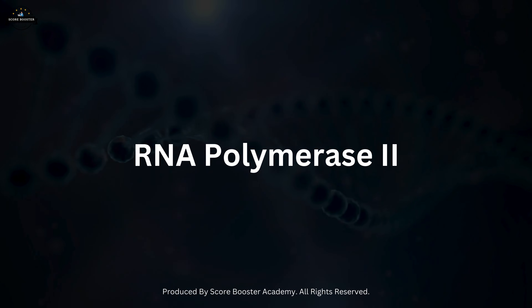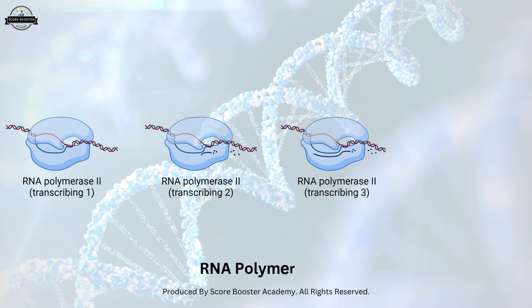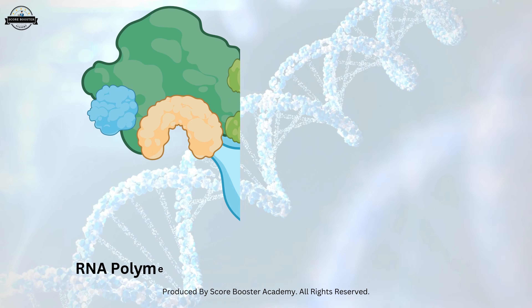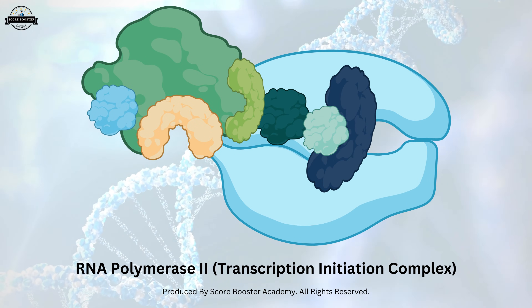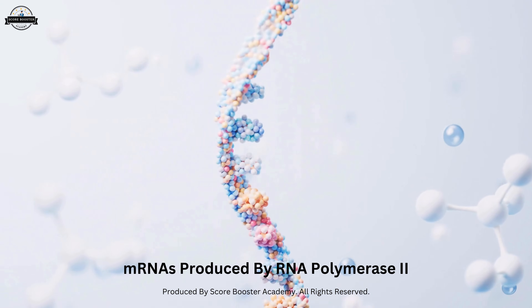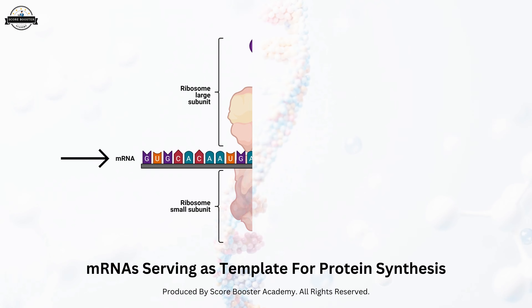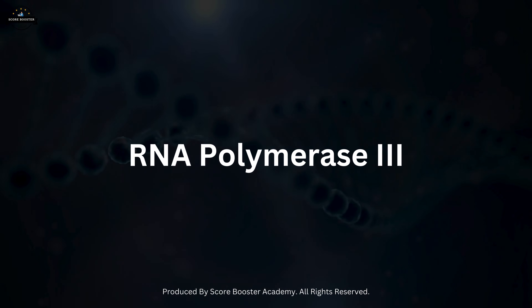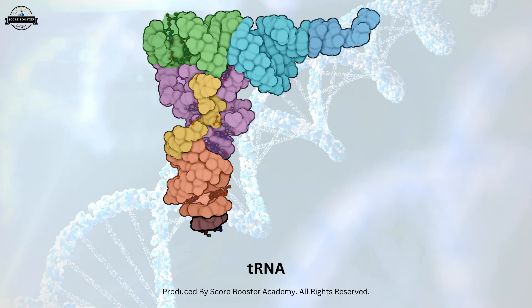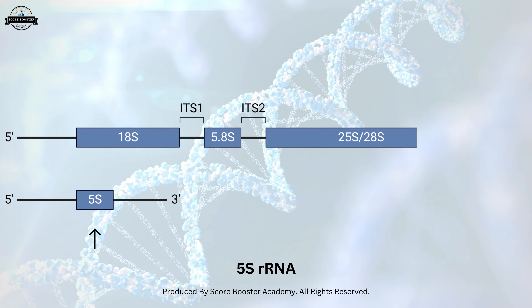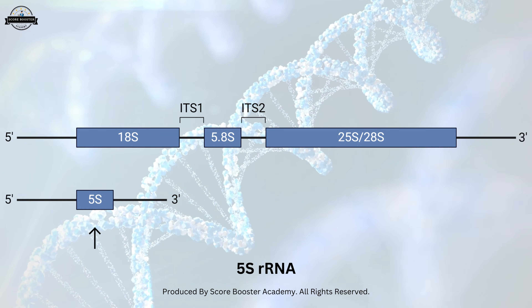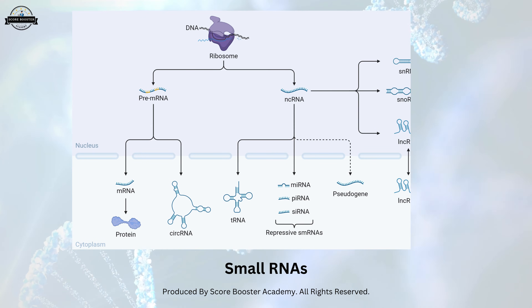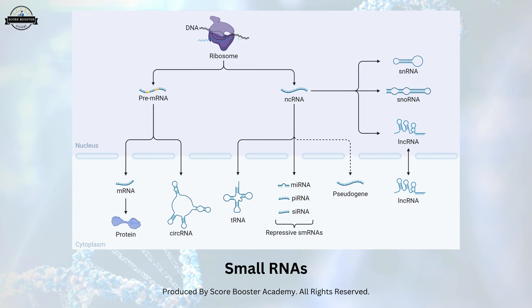RNA polymerase 2 is the most well-studied and is responsible for transcribing messenger RNA and some small nuclear RNAs. It requires a set of general transcription factors to initiate transcription. The mRNAs produced by RNA polymerase 2 serve as templates for protein synthesis during translation. RNA polymerase 3 transcribes transfer RNA genes, 5S rRNA genes, and other small RNAs involved in various cellular processes. These small RNAs play critical roles in translation, RNA processing, and the regulation of gene expression.